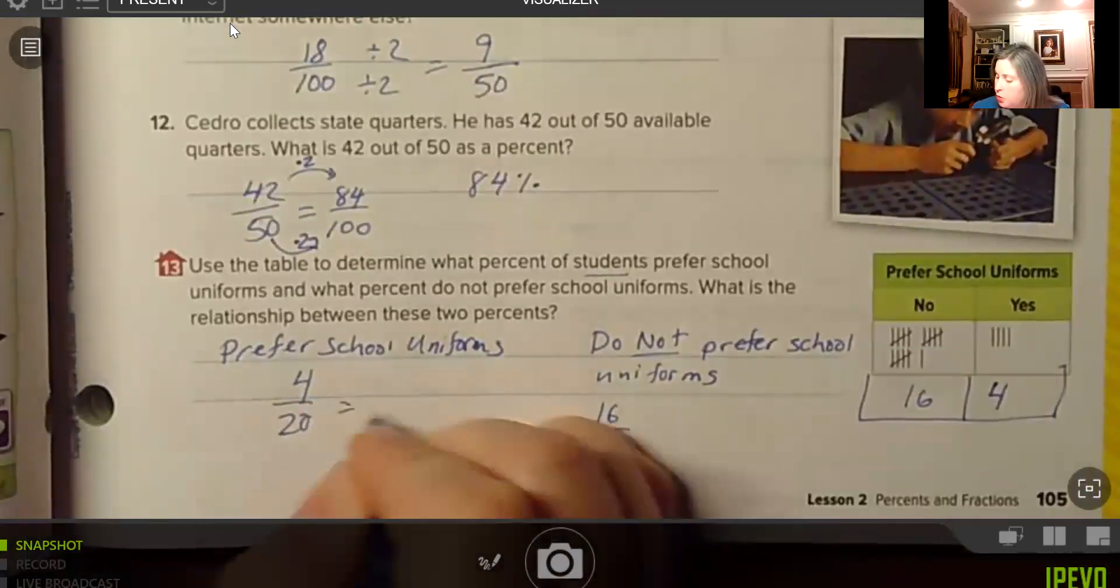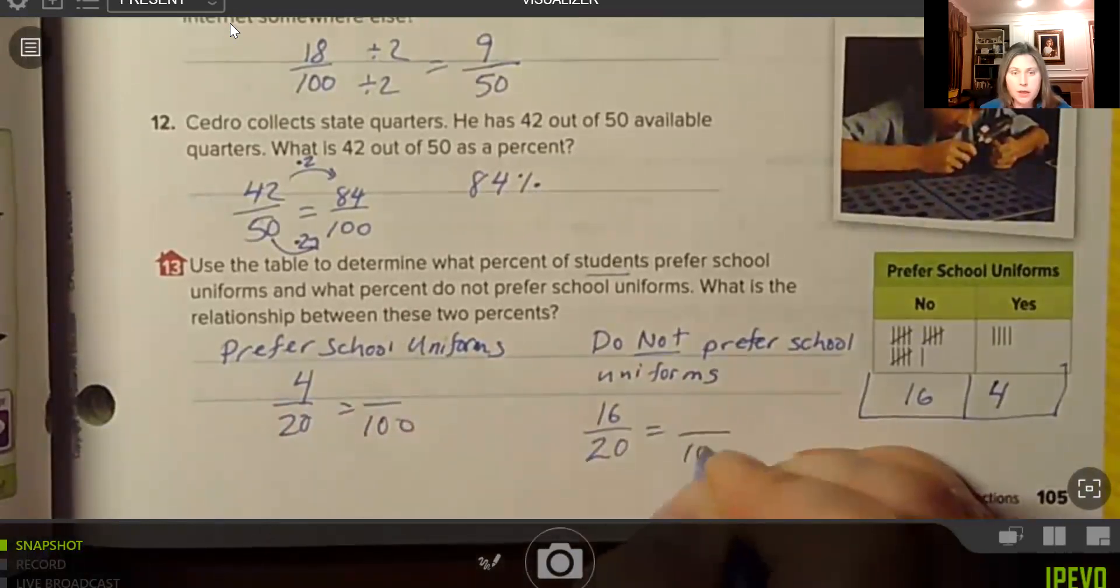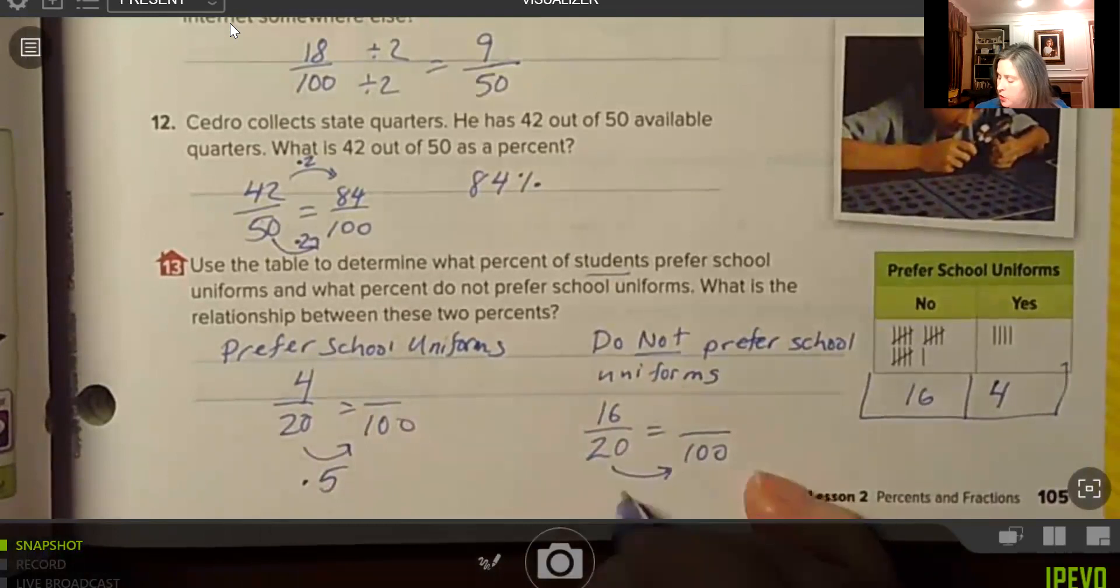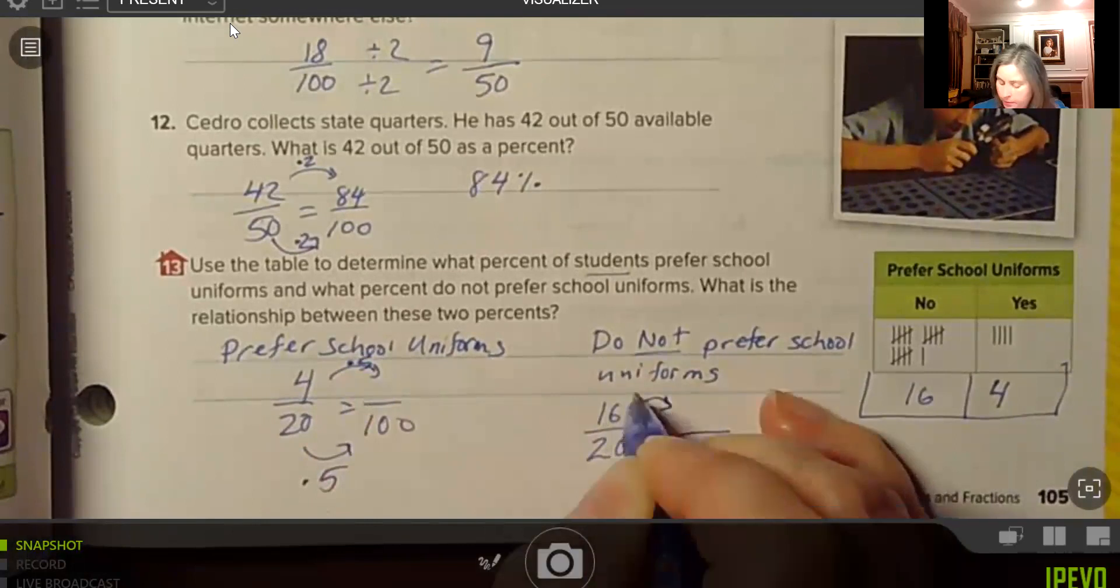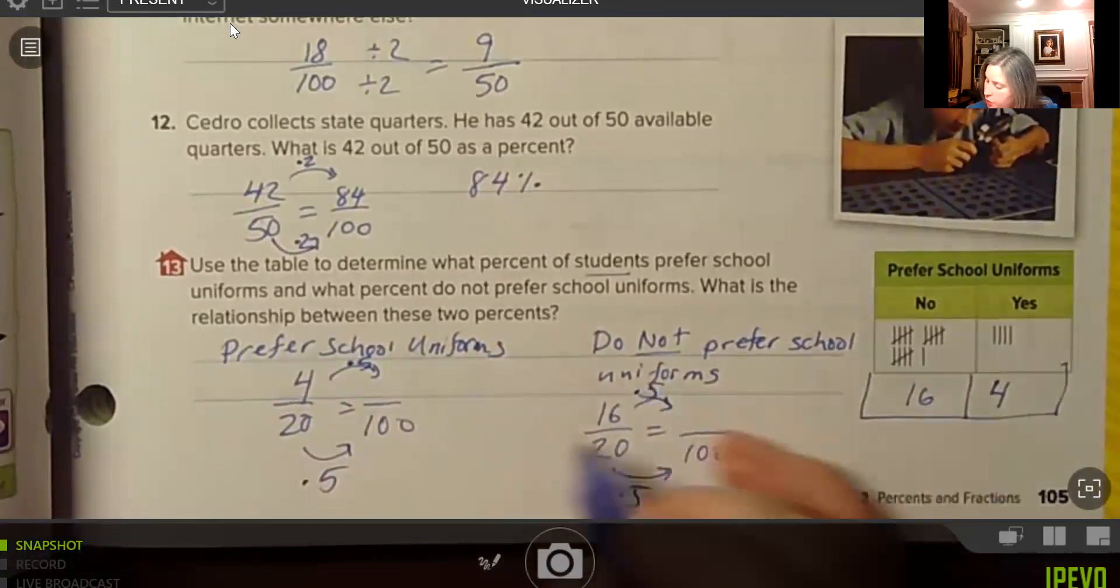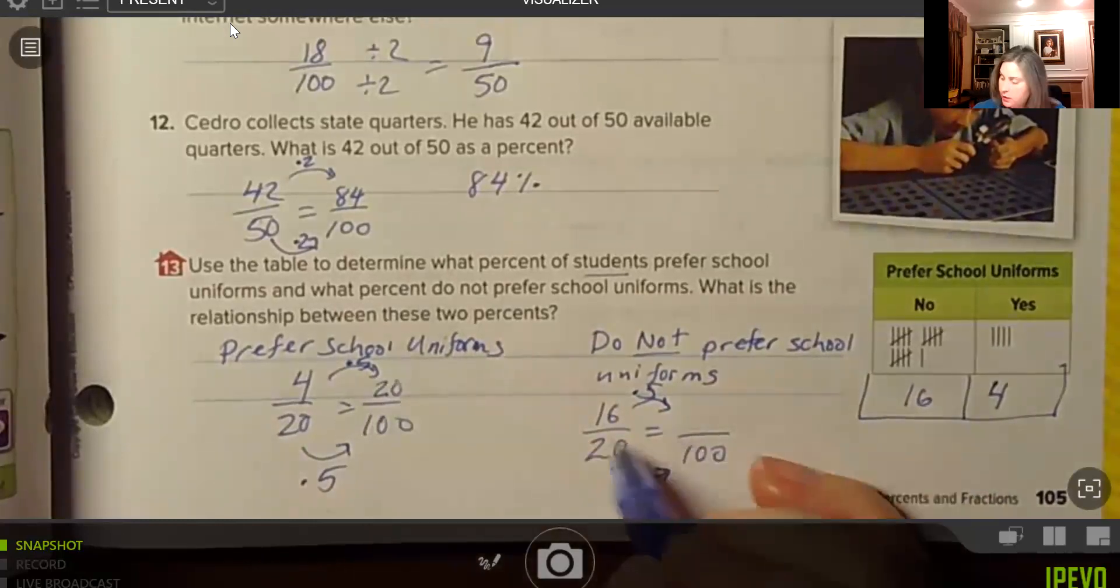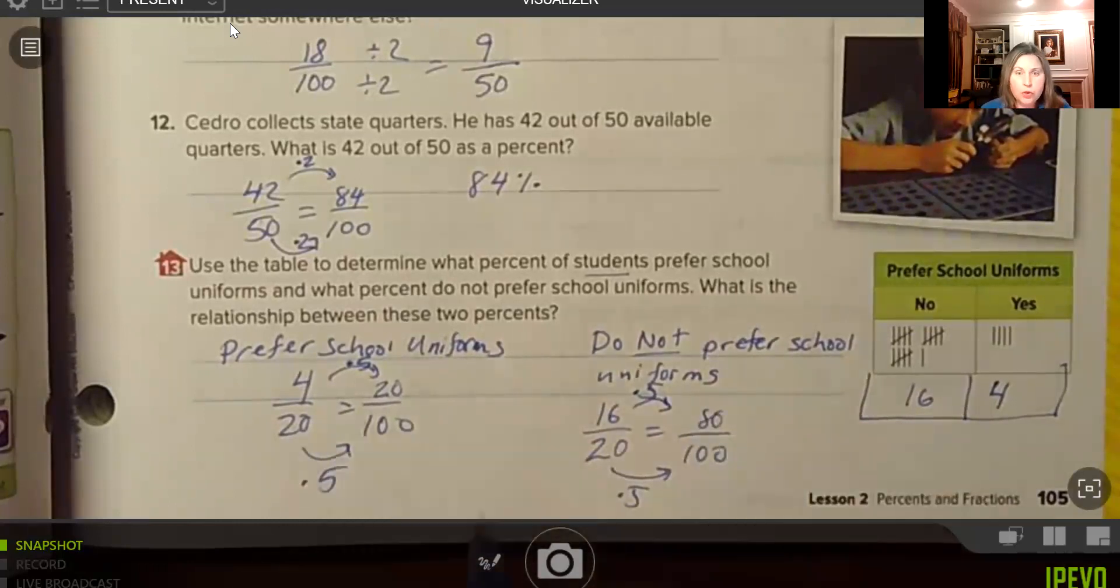So scale them up to a denominator of 100. And they both have the same denominator. So we can know that 20 goes into 100 five times. So we need to take our numerators and multiply them by five. So four times five is 20, and 16 times five is 80. So 20% of students prefer school uniforms, and 80% of students do not prefer school uniforms.